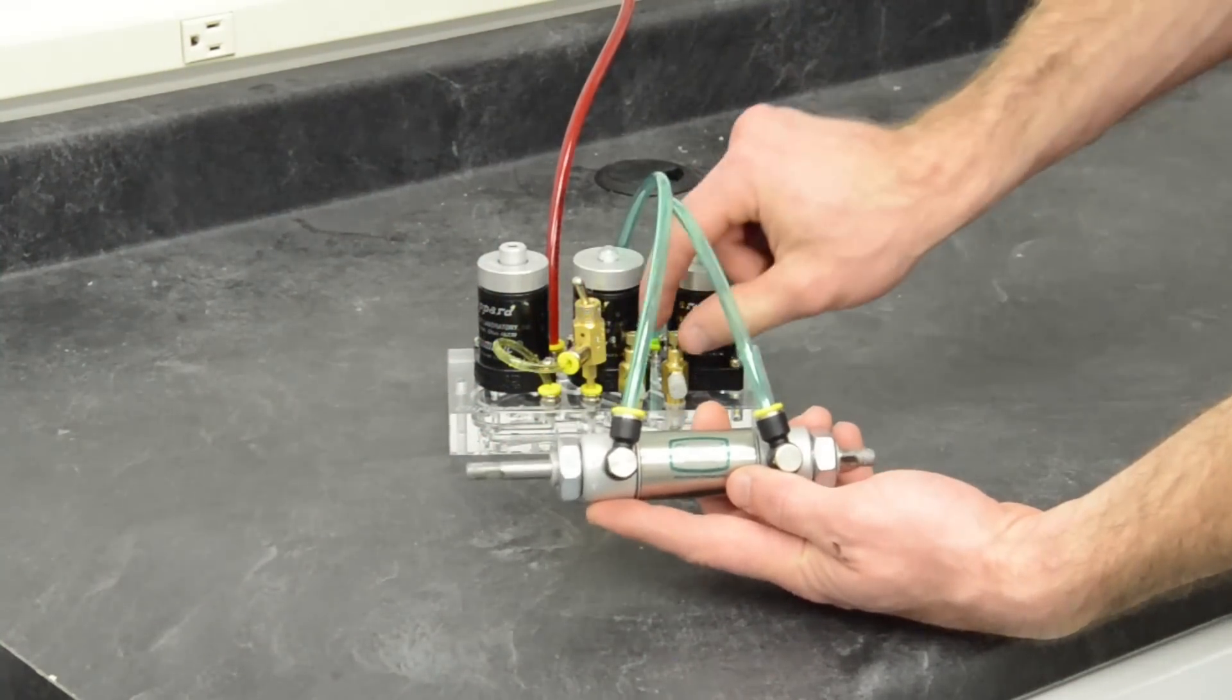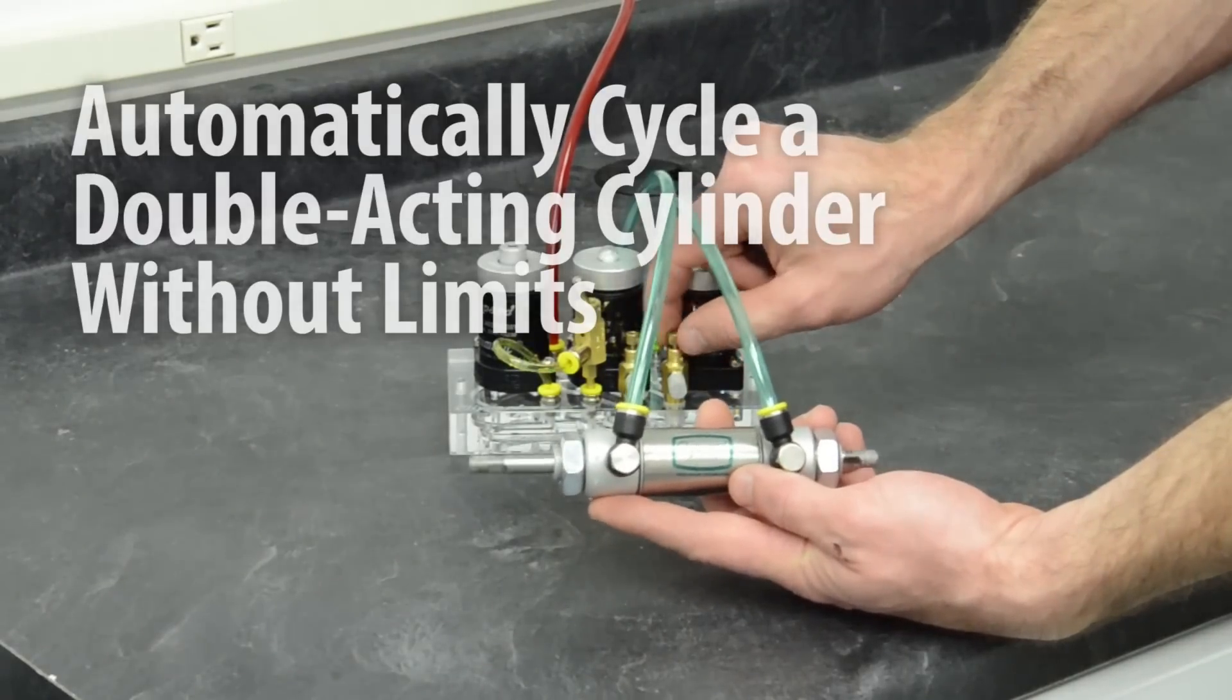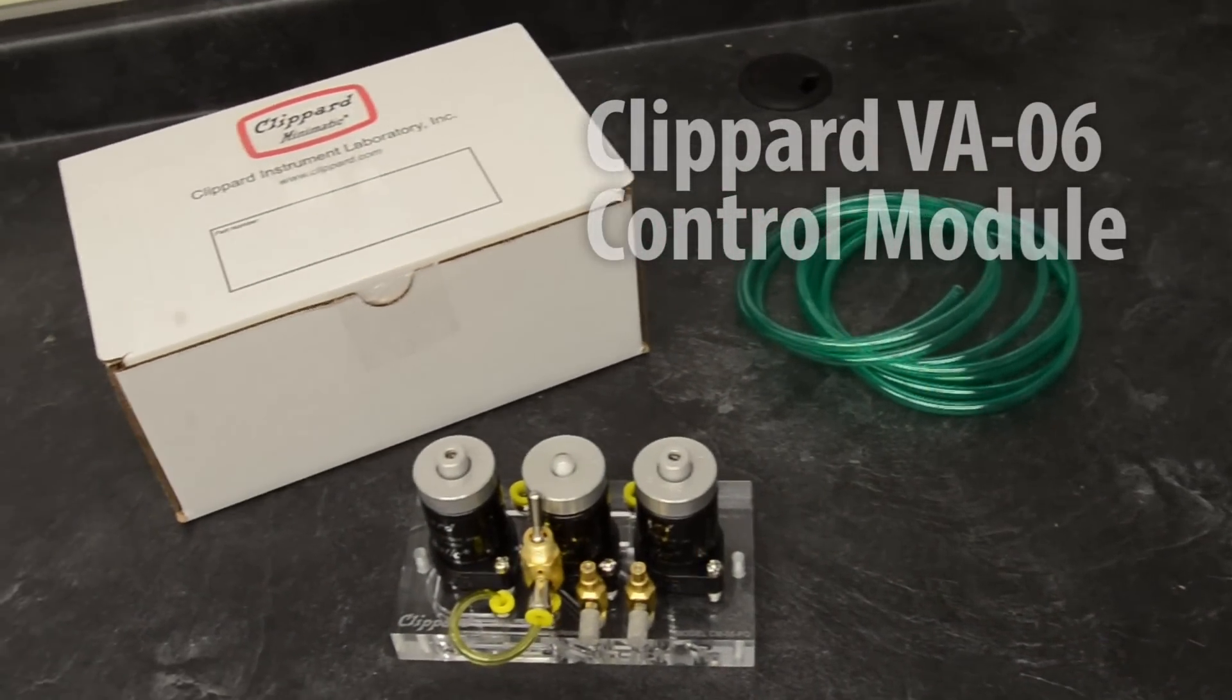In this video we're going to show you how to automatically cycle a double acting cylinder without limits using the Clippard VA-06 control module.